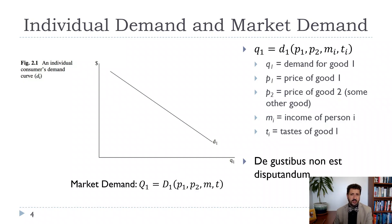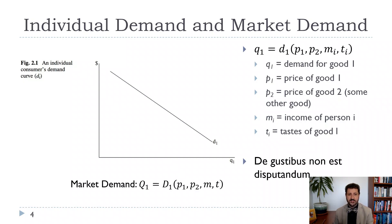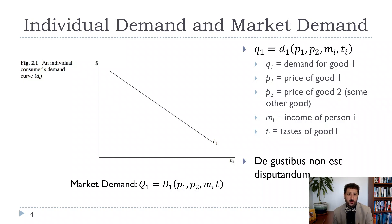So the phrase that economists have used is 'de gustibus non est disputandum' — if you want to be fun at parties, you can say that. It basically just means there's no point in arguing about tastes; people have different tastes.